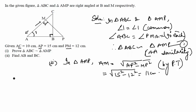So now from part 1, we get by corresponding parts of similar triangles AB by AM is equal to AC by AP is equal to BC by MP.